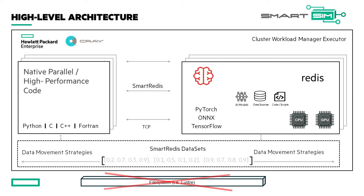Here's the architectural overview of SmartSim. There are two libraries — the infrastructure library and the SmartRedis library — shown in blue and green. Users access the infrastructure library through a Jupyter notebook or standard Python script, using a simple 'from SmartSim import experiment.' Through that API, they build an experiment containing entities such as a scientific application or an orchestrator, which allows them to store data, run scripts, or run AI models.